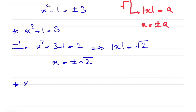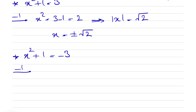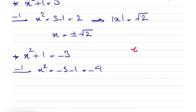For the second case, x² + 1 = -3. Subtracting 1 from each side gives x² = -4. Since x² must equal a positive number, the negative result means we have to deal with complex answers.